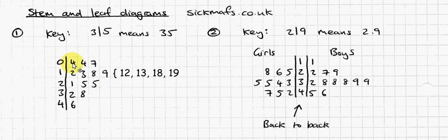So 0 tens plus a number, 1 tens, 2 tens, the 20-somethings, and the 30-somethings, and the 40-somethings there. And that's a normal stem and leaf diagram.